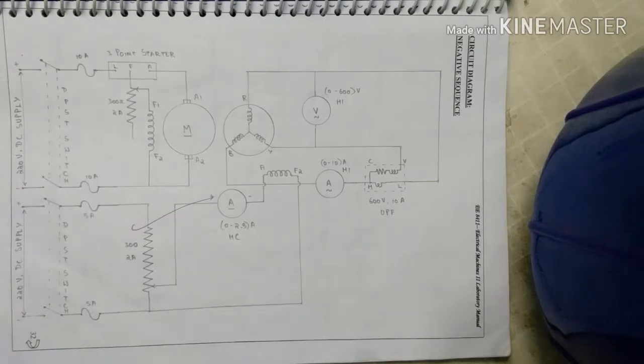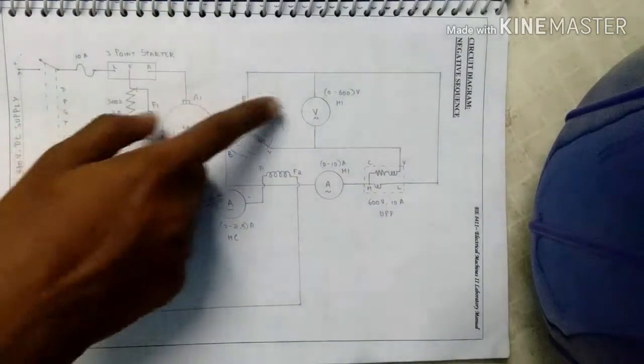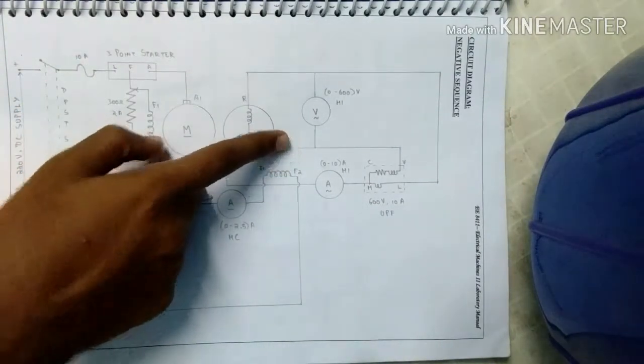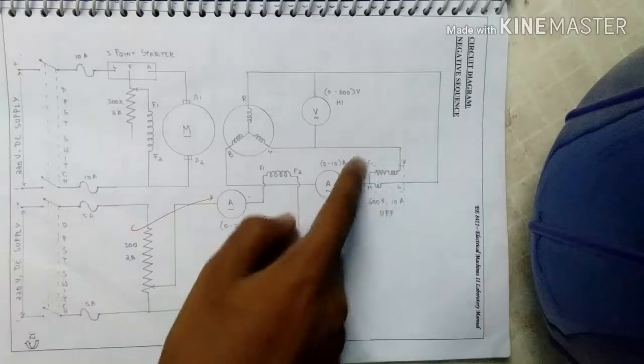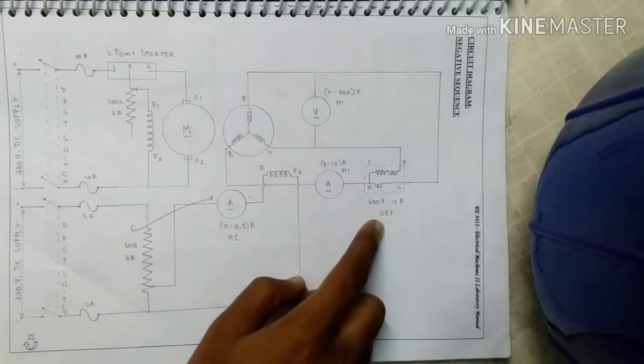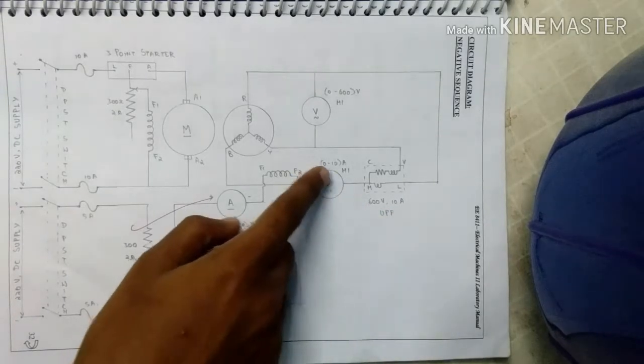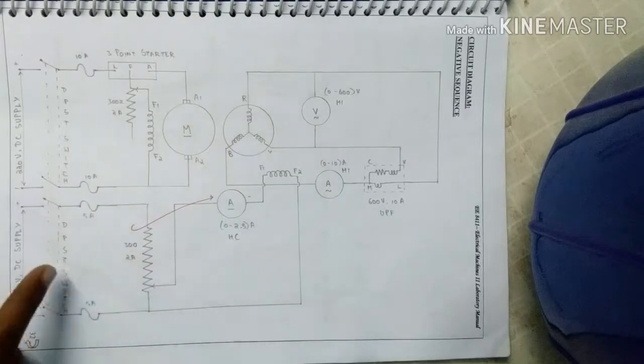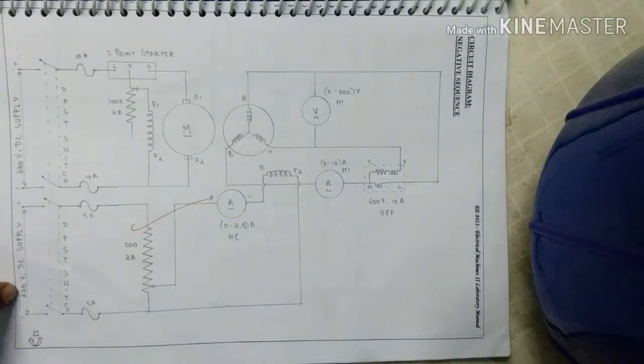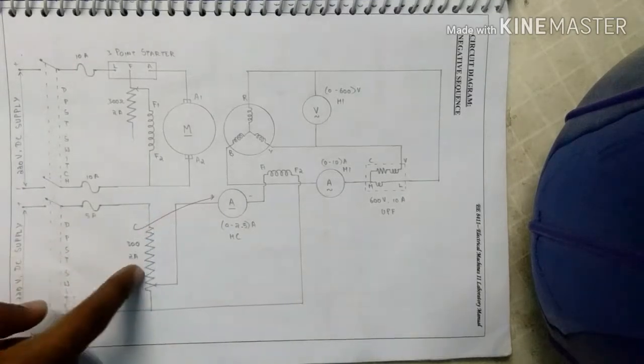For negative sequence, this is a circuit diagram. Here we connect the voltmeter across any two phases and then we connect here a wattmeter that is 600 volt 10 ampere UPF. And then here we connect an ammeter 0 to 10 ampere. The field winding is excited by a separate 220 volt DC supply. Here we connect a rheostat.